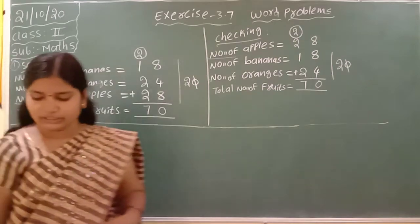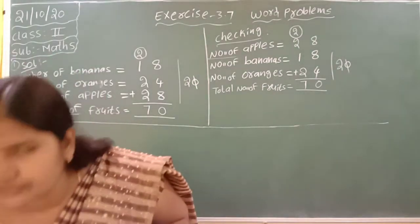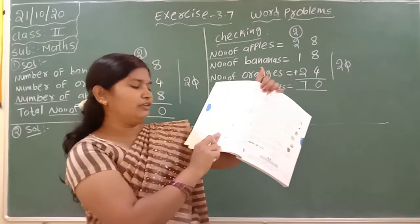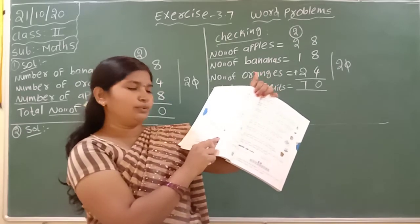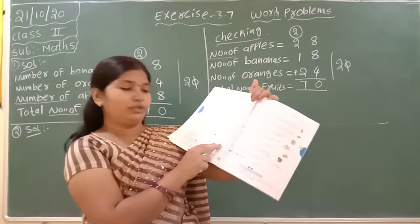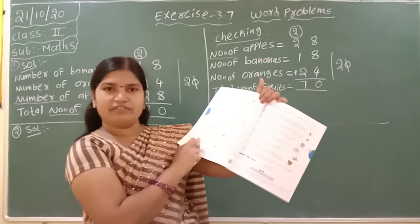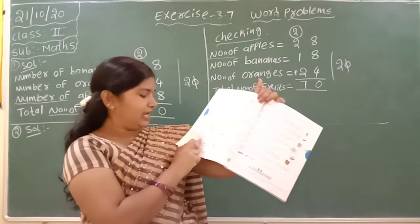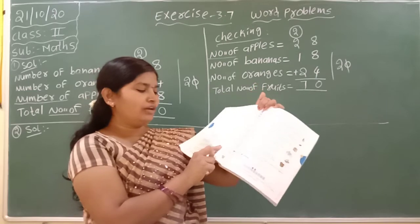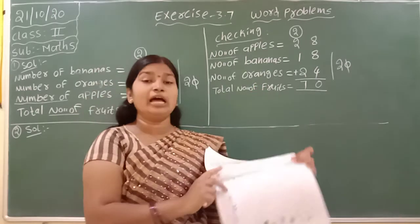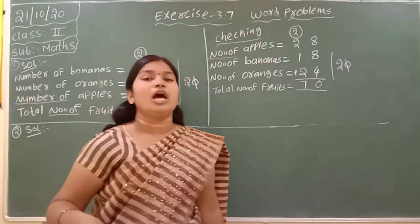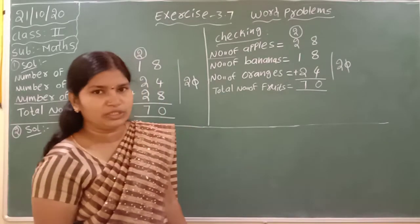What is the second question, children? See in your books. A class went for a picnic to Nectar Park. There were seventy-two boys, sixty-seven girls and eighteen teachers. How many people in all went for the picnic? They are asking how many members went totally.